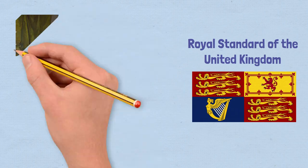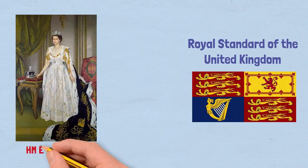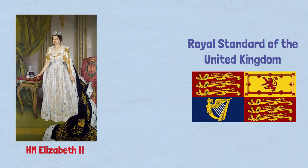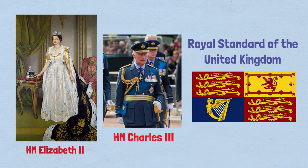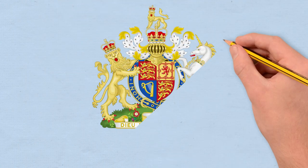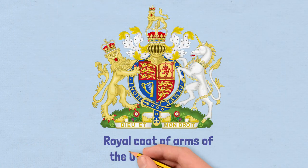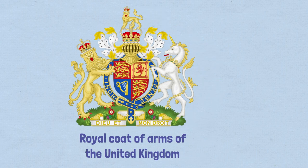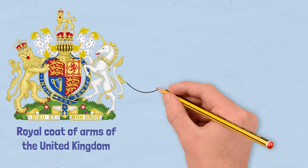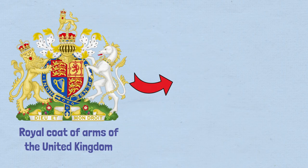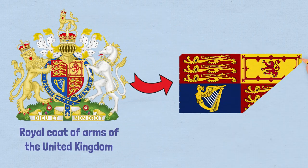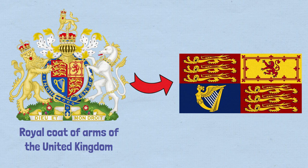It was used during the reign of Queen Elizabeth II, and now represents the current sovereign, who is King Charles III. This flag is merely a banner of arms, meaning that it uses a shield within the Coat of Arms of the UK as the design of the flag as a whole.